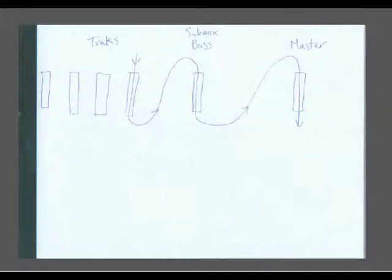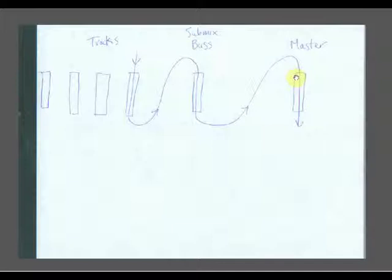When would you actually use this? The typical use is for drums. These would be your drum tracks — typically there's more than four, let's say eight or ten. You'd route them to a submix bus, they'd get summed, then they'd hit a compressor, then they'd go to the master track.